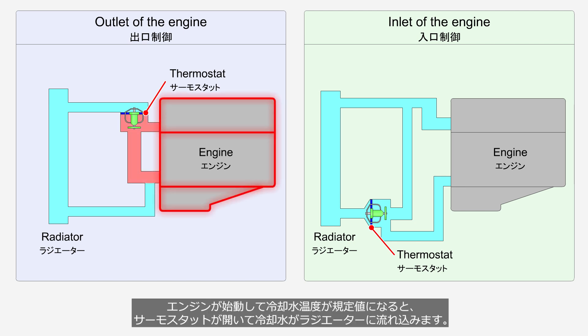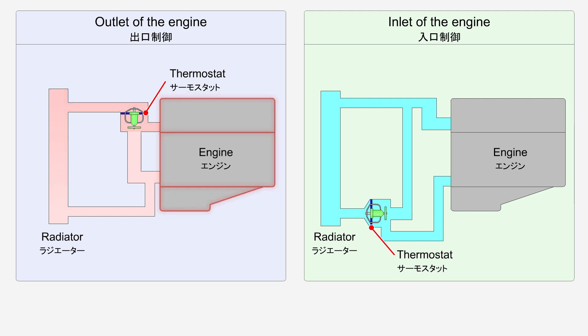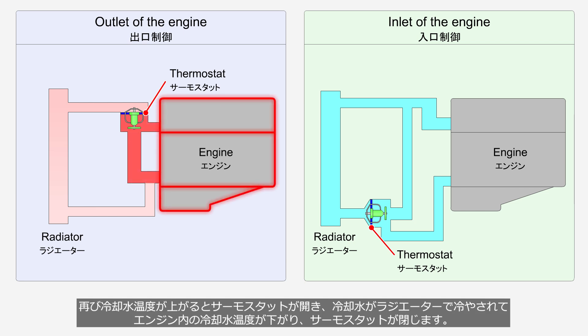When the coolant temperature reaches the specified value after the engine starts, the thermostat opens, allowing the coolant to flow into the radiator. Once the cooled coolant returns to the engine from the radiator, the temperature of the coolant inside the engine decreases, causing the thermostat to close again. When the coolant temperature rises again, the thermostat opens, allowing coolant to flow into the radiator, and as it is cooled, the temperature inside the engine decreases, leading to the closure of the thermostat once more.